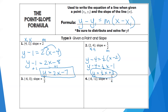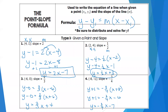Go ahead and try numbers 3 and 4 — write those equations in point-slope form, then use the distributive property and algebra to get them into y equals mx plus b form. For number 3, the final answer is y equals two-thirds x plus 4. For number 4, y equals negative three-fourths x minus 7. It's especially easy when a coordinate has a zero in it — adding or subtracting zero is simple.